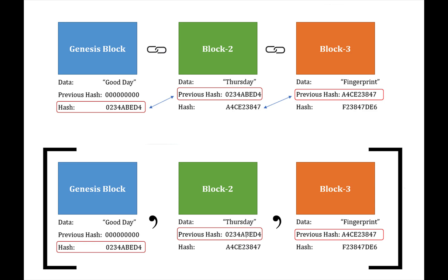The problem is that we'd have to rehash every single block when we want to calculate the correct hash of the block we're currently looking at. So if the data in one block was changed, that hash changes, which means the next hash changes, which should mean the following hash changes too — because it depends on the previous one. We'd have to recalculate all of that in order to find it.